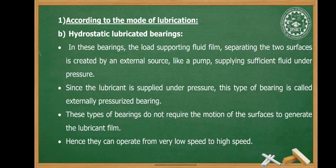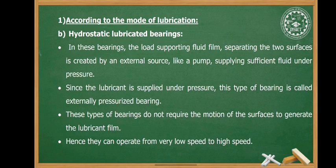The second type is hydrostatic lubricated bearings. In these bearings, the load-supporting fluid film separating the two surfaces is created by an external source, like a pump supplying sufficient fluid under pressure. Since the lubricant is supplied under pressure, this type of bearing is called an externally pressurized bearing. These bearings do not require motion of the surfaces to generate the lubricant film; hence, they can operate from very low speed to high speed.